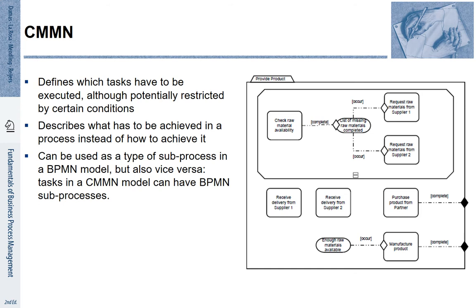Other activities are relevant to this process, including receiving delivery from supplier 1 or receiving delivery from supplier 2. Clearly, these are optional. If enough raw materials are available, we can manufacture the product. This may then lead to a completion of the process, as much as purchasing a product from a partner and selling it.